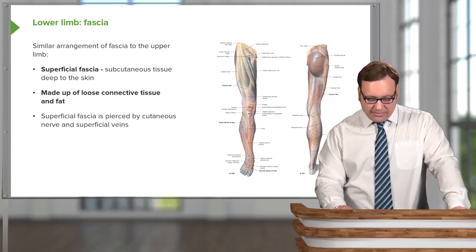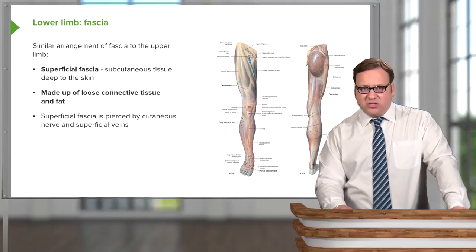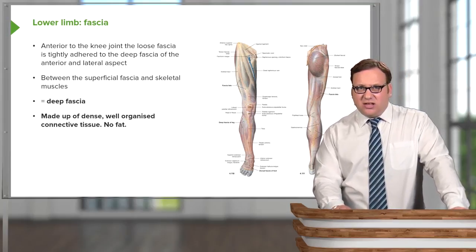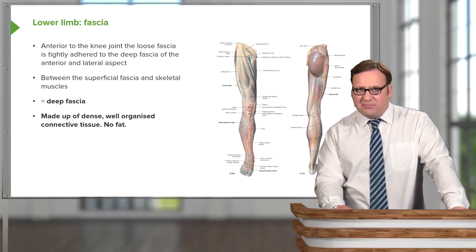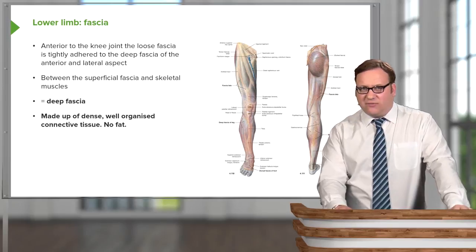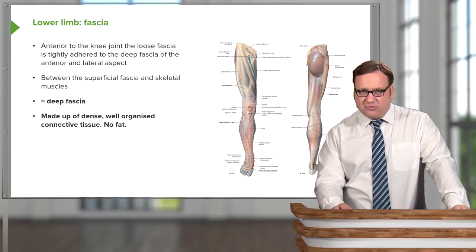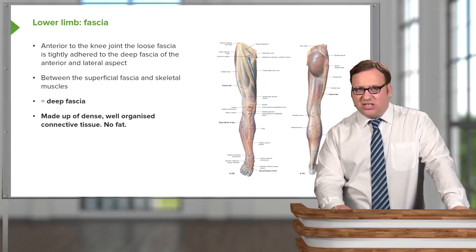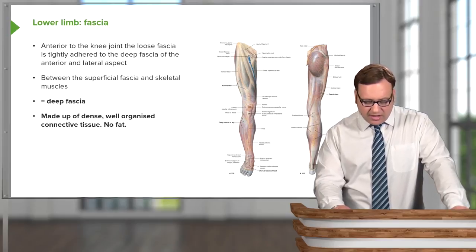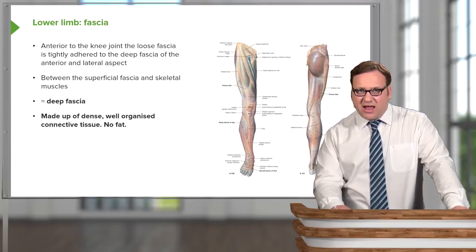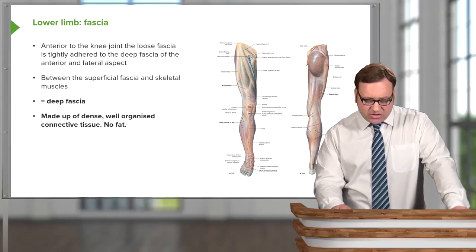The superficial fascia of the lower limb, again just like that of the upper limb, is pierced by cutaneous nerves and superficial veins. Anterior to the knee joint, the loose fascia is tightly adhered to the deep fascia of the lateral and anterior aspects. That enables effective contraction of the knee joint and it prevents any fascia from being trapped due to flexion of the knee. Between the superficial fascia and skeletal muscles, we have the deep fascia.